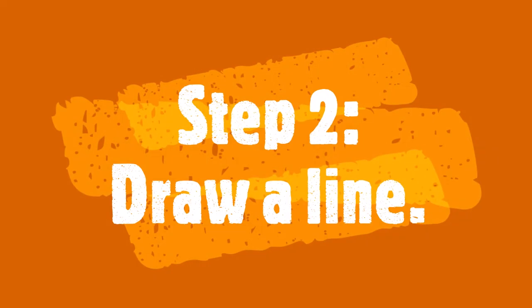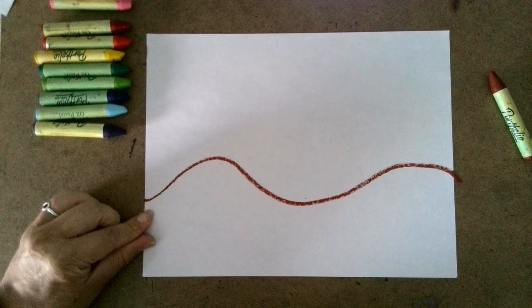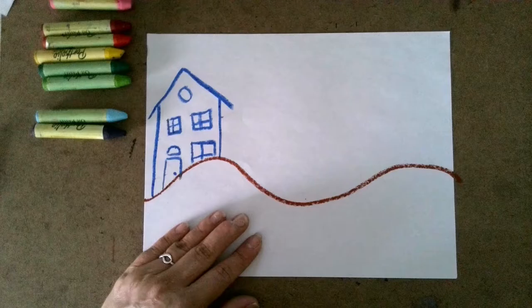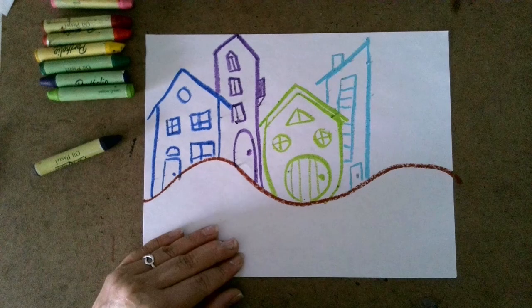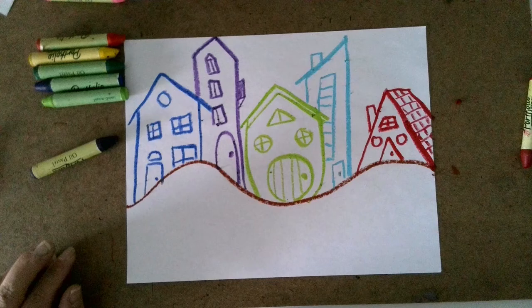Step two: draw a line. Use a brown or green color to draw a wavy horizontal line across your paper. Step three: draw houses. You'll start off on the left side drawing a house. Your house can be any color you want, but the house next to it needs to be a different color. Not only that, but it needs to be a different shape — it can be round houses, tall houses, or really red triangular houses.